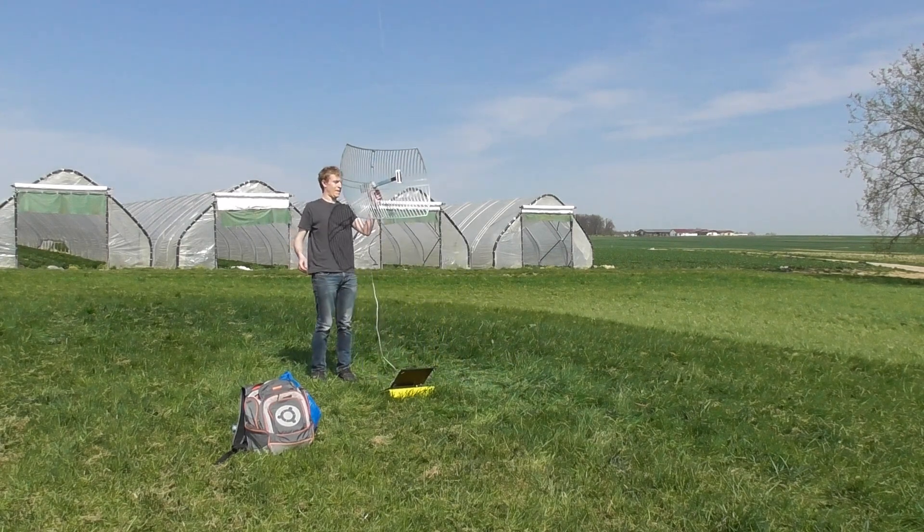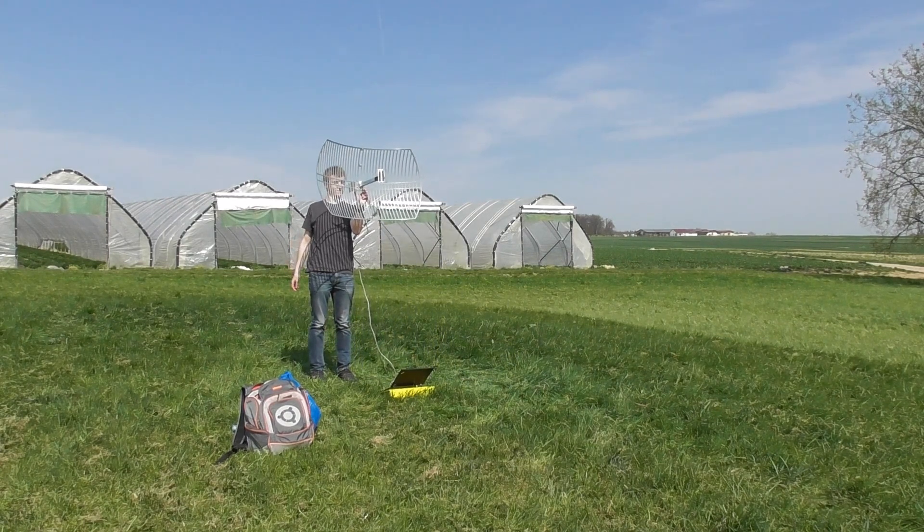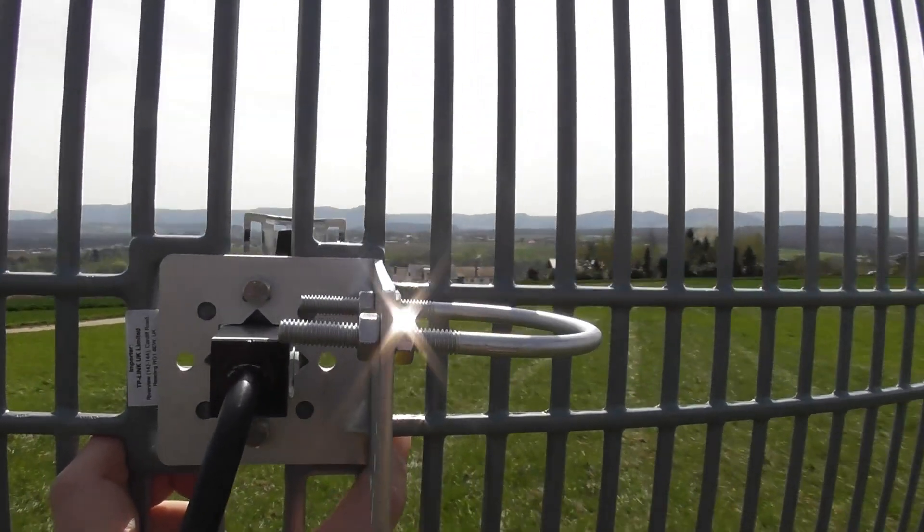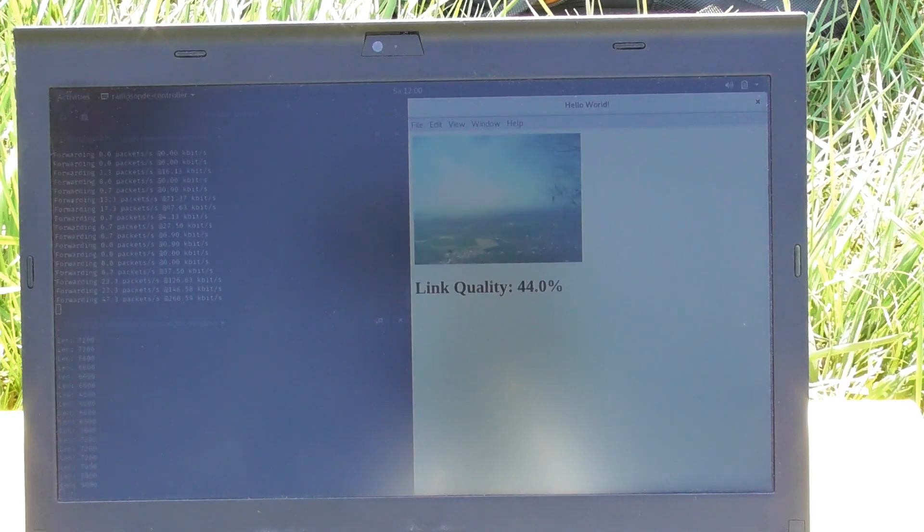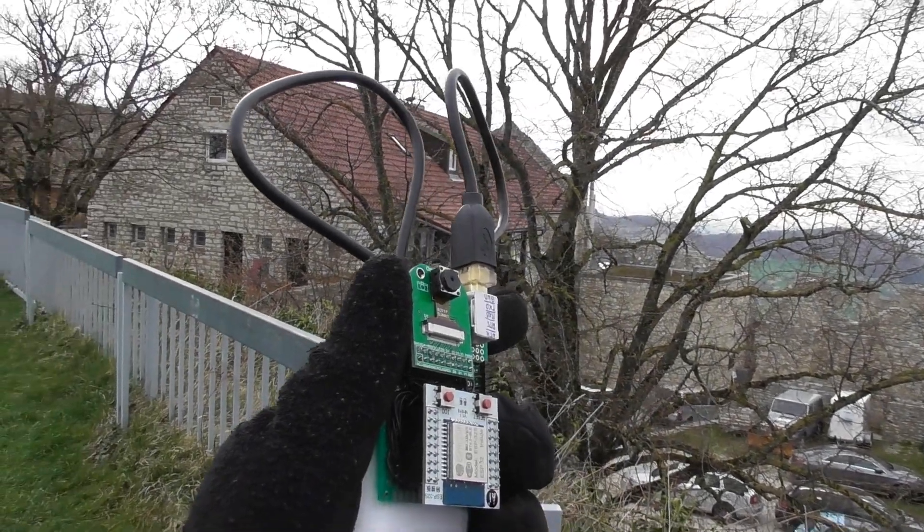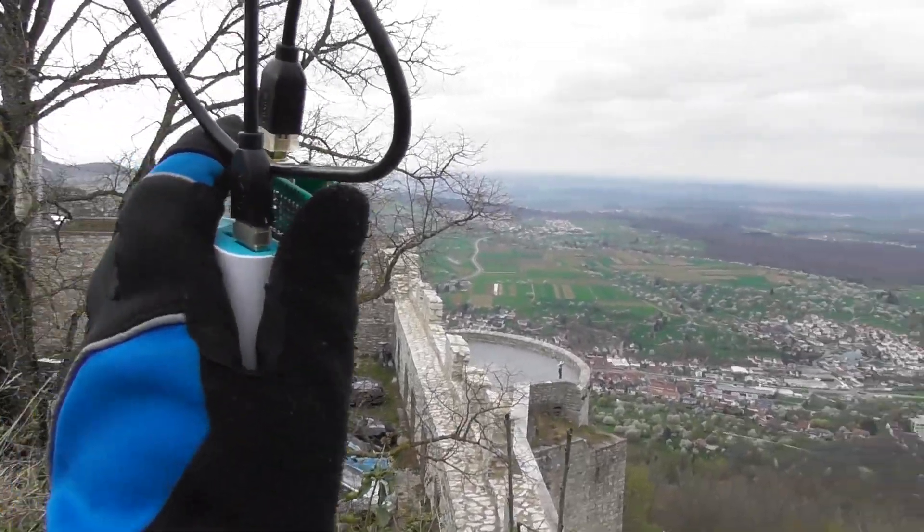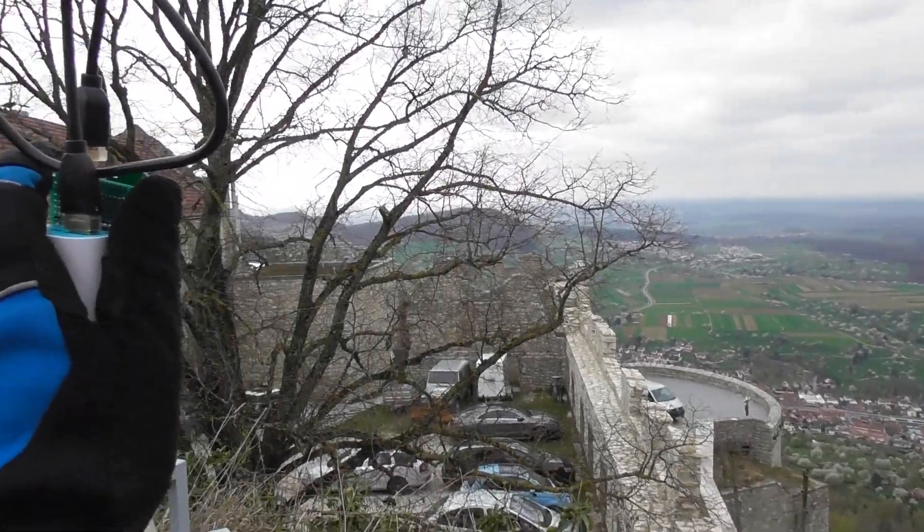As it turns out, just manually pointing the aerial in the general direction of the castle is enough to get decent signal strength. The image quality might not be the best, but picking up signal from the ESP32 from a distance of 10km was no problem at all.